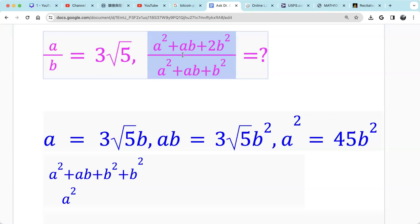And we want to find out this expression. The numerator will have A squared plus AB plus 2B squared. The denominator will have A squared plus AB plus B squared. So they only differ by B squared in this case.